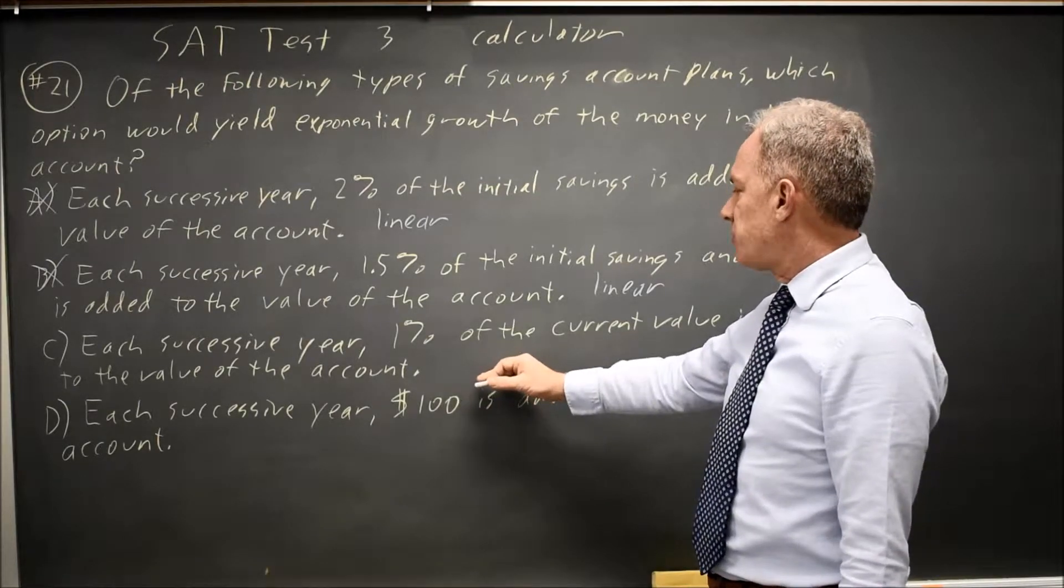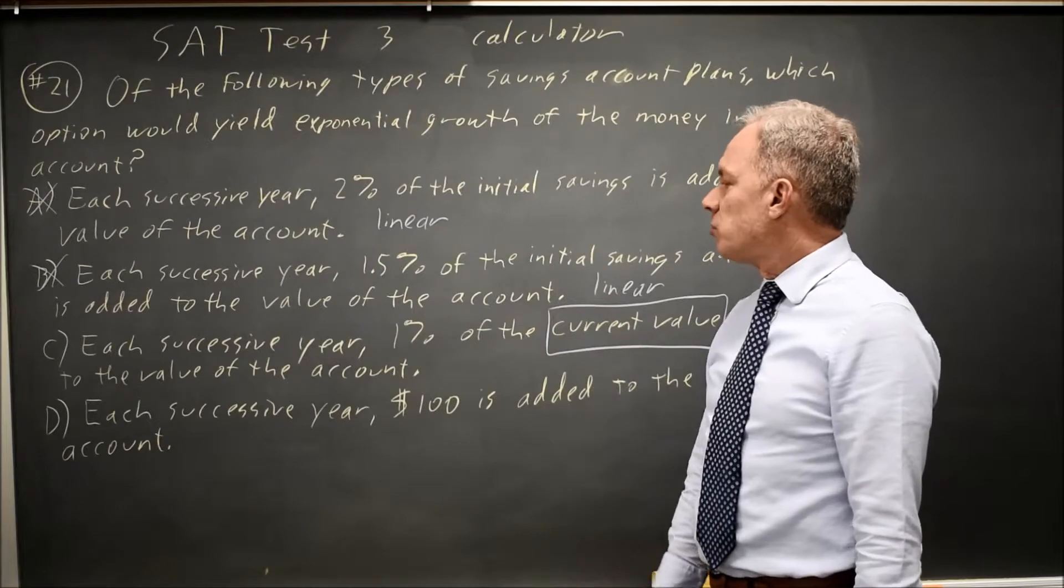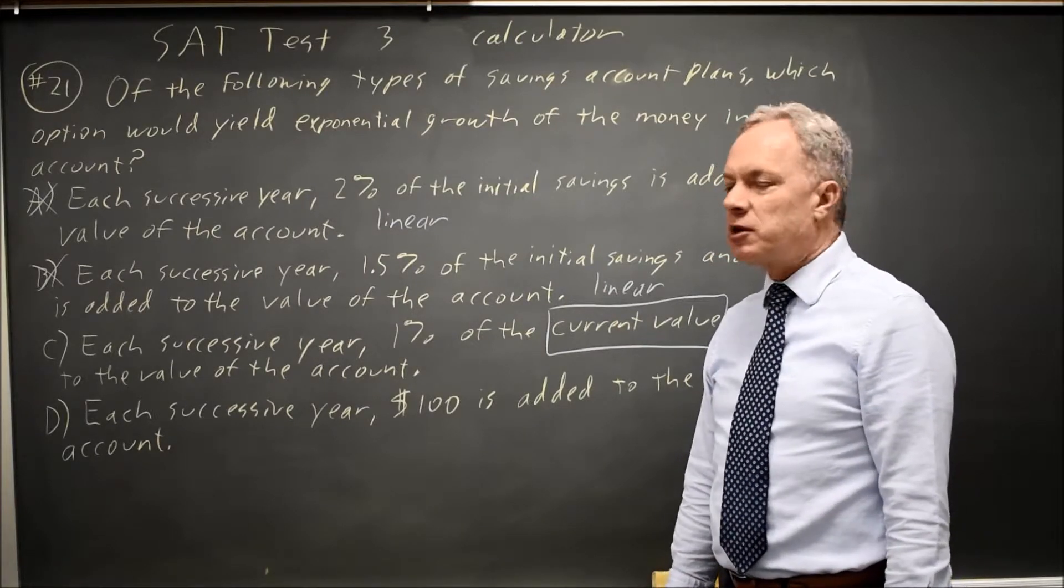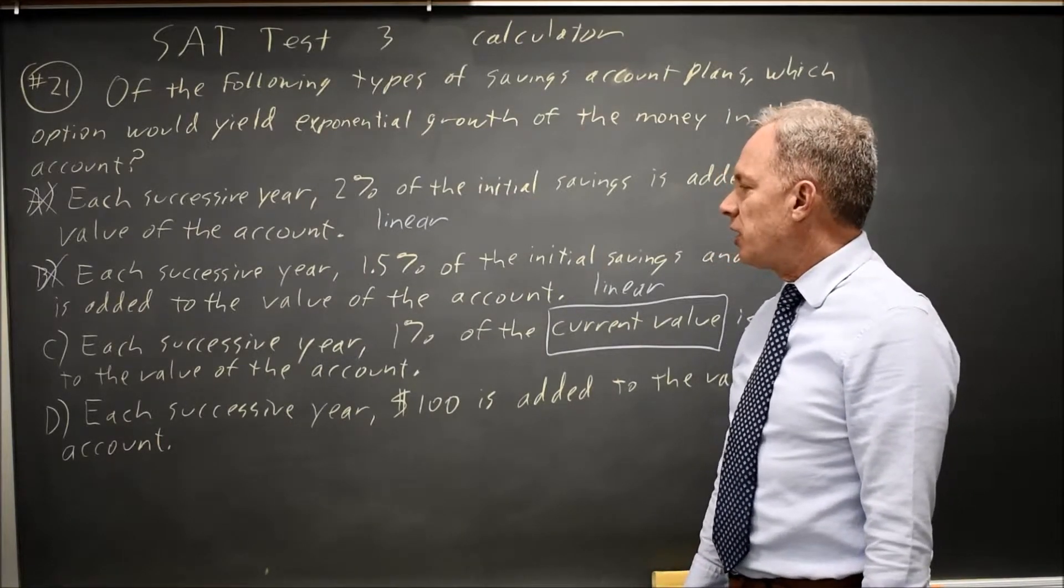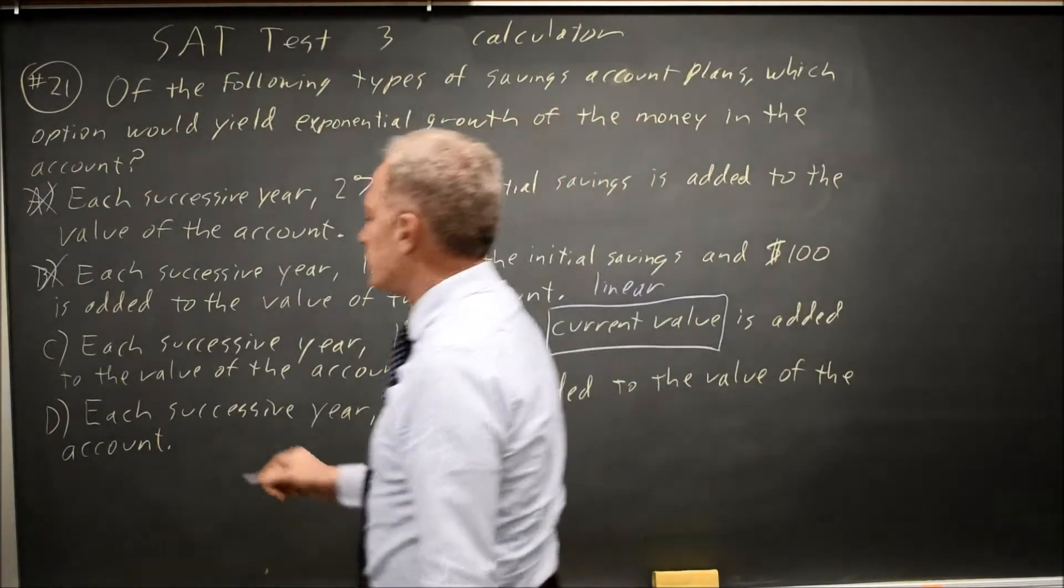Choice C, each successive year, 1% of the current value. So we're multiplying the current value by 1.01. That would be exponential, which is what we're looking for.